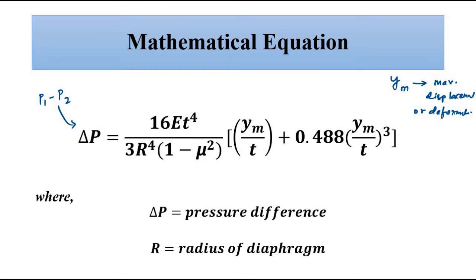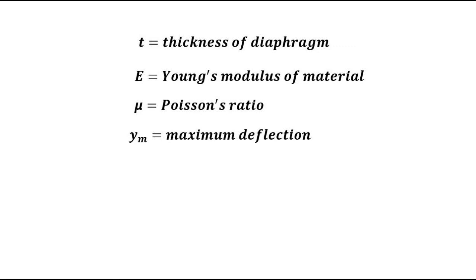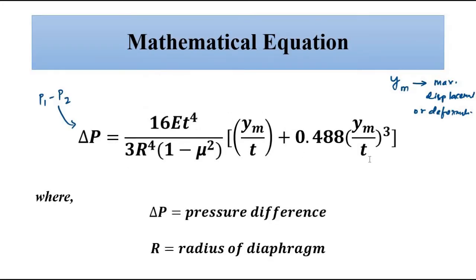These terms — Young's modulus E and Poisson's ratio μ — have already been discussed in detail in the material science and engineering playlist and in previous sensors and transducers videos. These are repetitive terms that come up in mechanical transducers, so please refer to those videos for detailed explanations rather than repeating them here.